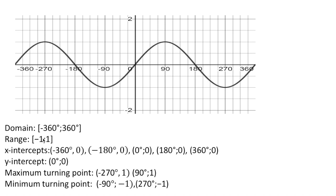The x-intercept is where the graph cuts the x-axis. The sine function cuts the x-axis at: (−360, 0), (−180, 0), (0, 0), (180, 0), and (360, 0). It has only one y-intercept — when you look at the graph, it cuts the y-axis at only one point, which is (0, 0).